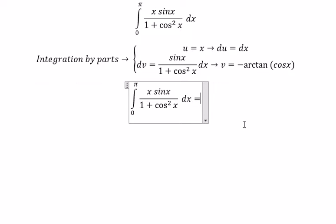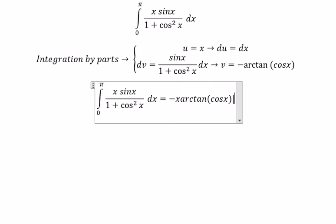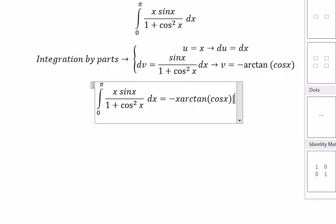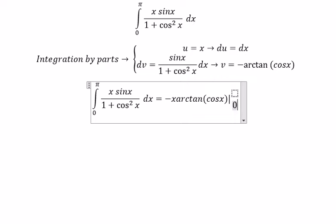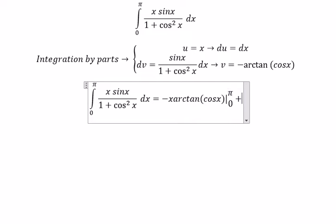We have u multiply with v, and we put the boundaries in there. Because we have a negative, we get a positive.